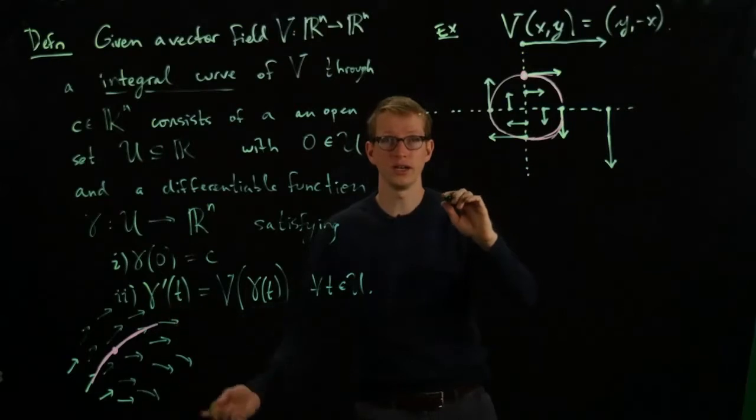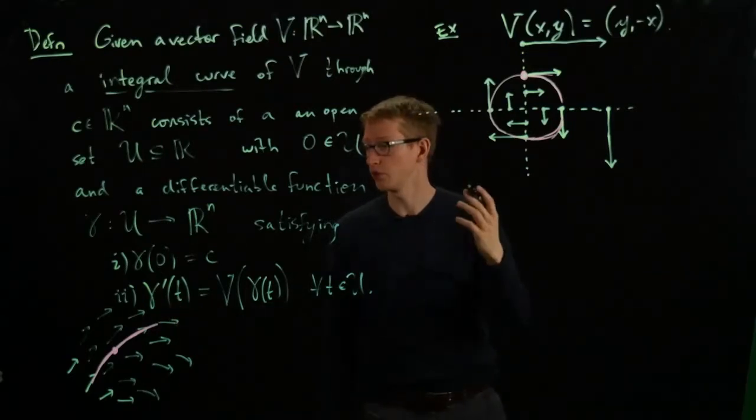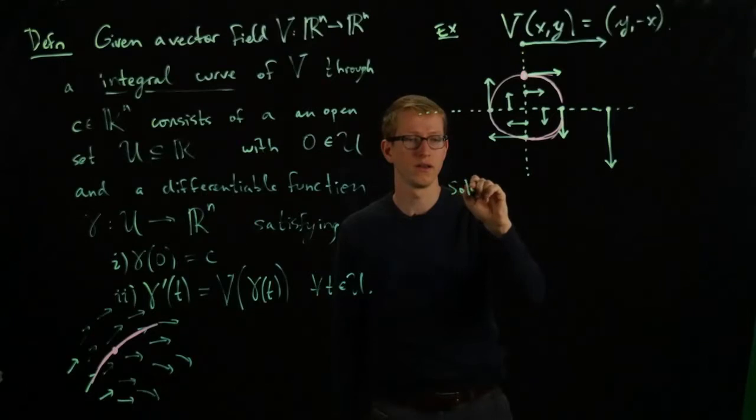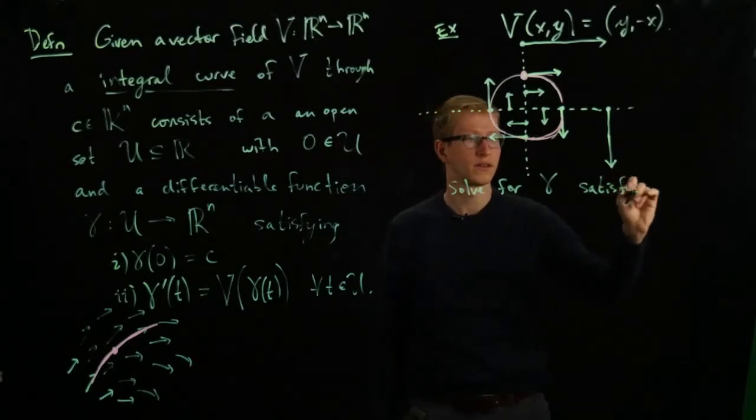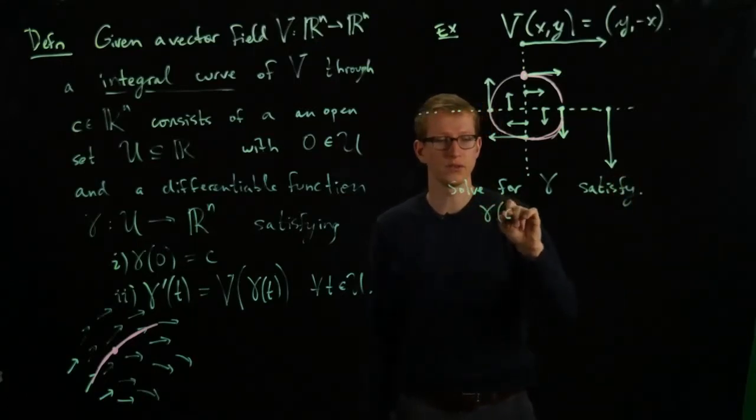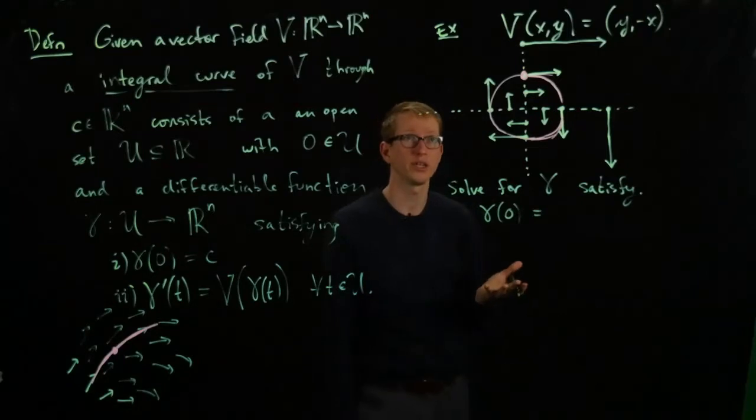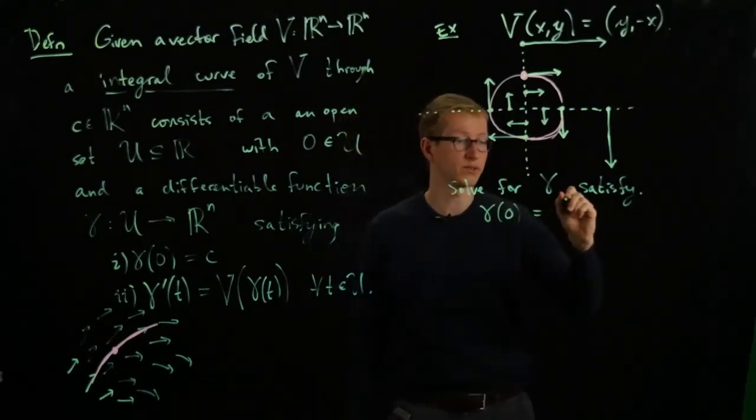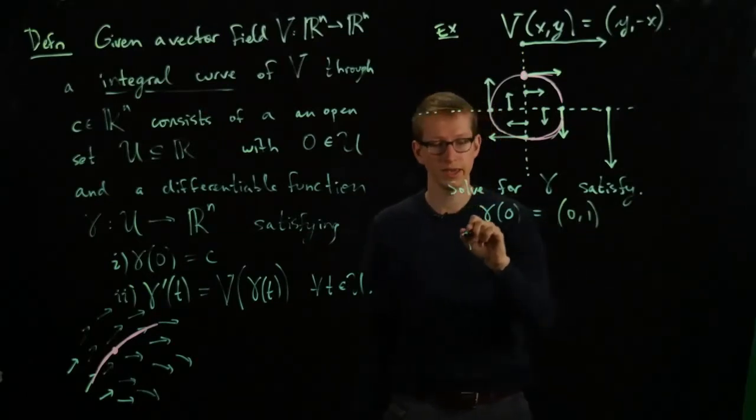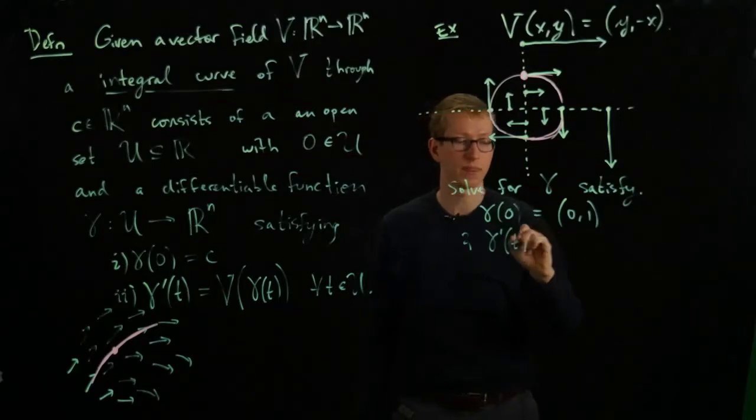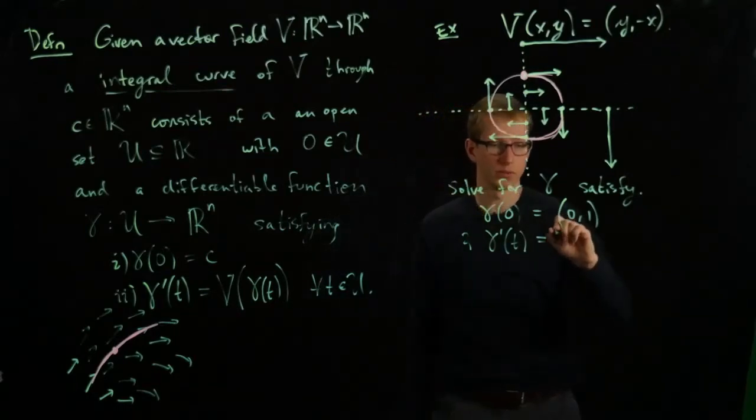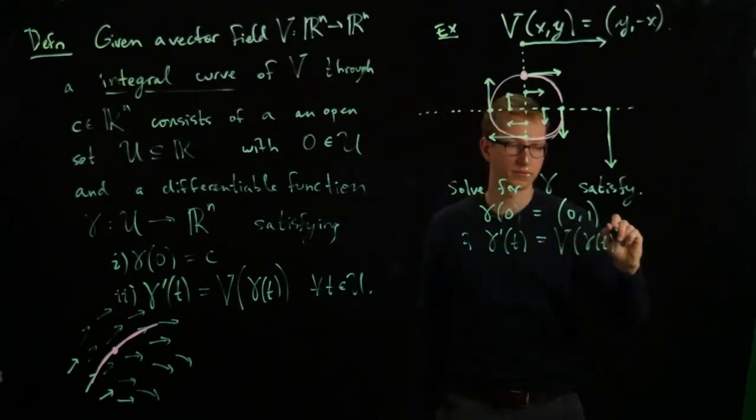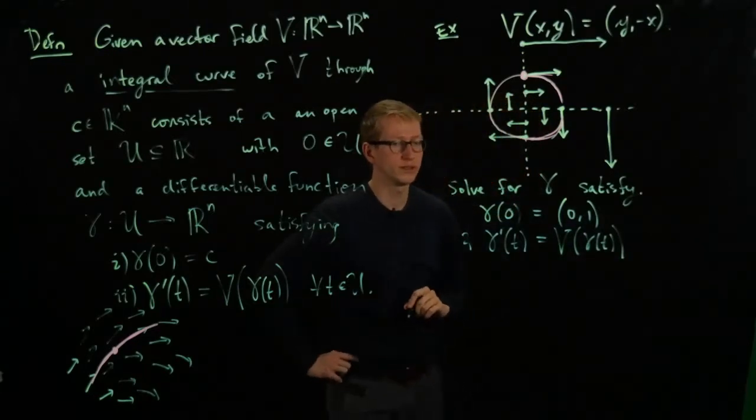And suppose we have such a curve. What we want to do is we want to solve for gamma, satisfying gamma of 0 equals some number. And let's just be concrete. Let's say that number is (0,1). Let's say that vector is (0,1). And the derivative of gamma at any point in time t is equal to the value of the vector field at that time. So it's supposed to be v(gamma(t)).